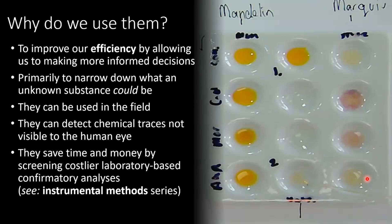So why do we use them? We primarily use them to improve our efficiency by allowing us to make better, more informed decisions. One way to use presumptive tests is to narrow down what an unknown substance could be, and if you can limit those options you can make better decisions in terms of choosing a confirmatory test later on. Presumptive tests can also be used in the field, whereas many of the more advanced tests are primarily laboratory-based, so you can get forensic intelligence quicker. They are capable of detecting chemical traces that aren't visible to the human eye, and they save time and money by screening out costlier laboratory-based confirmatory analysis.